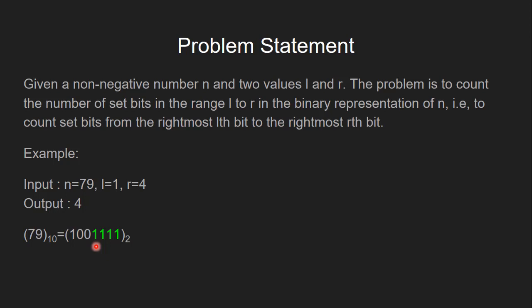Let's see another example. If n equals 79 and the range is l equals 1 to r equals 4, then the output is 4. Here, in the binary representation of 79, I have highlighted the bits in the range from l equals 1 to r equals 4. If we count the number of set bits in this range, it is 4, so the output is 4.